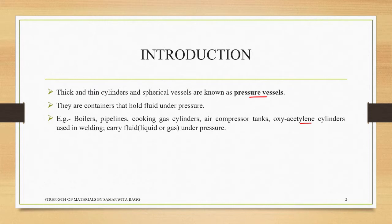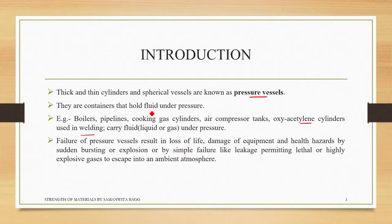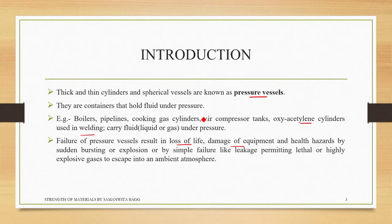Oxyacetylene cylinders are two cylinders that carry oxygen and acetylene separately, used for welding. They carry liquid or gases under pressure. The design of pressure vessels is very important because failure of pressure vessels can result in loss of life — for example, if an LPG cylinder explodes or leaks, even lighting a matchstick could set an entire house ablaze.